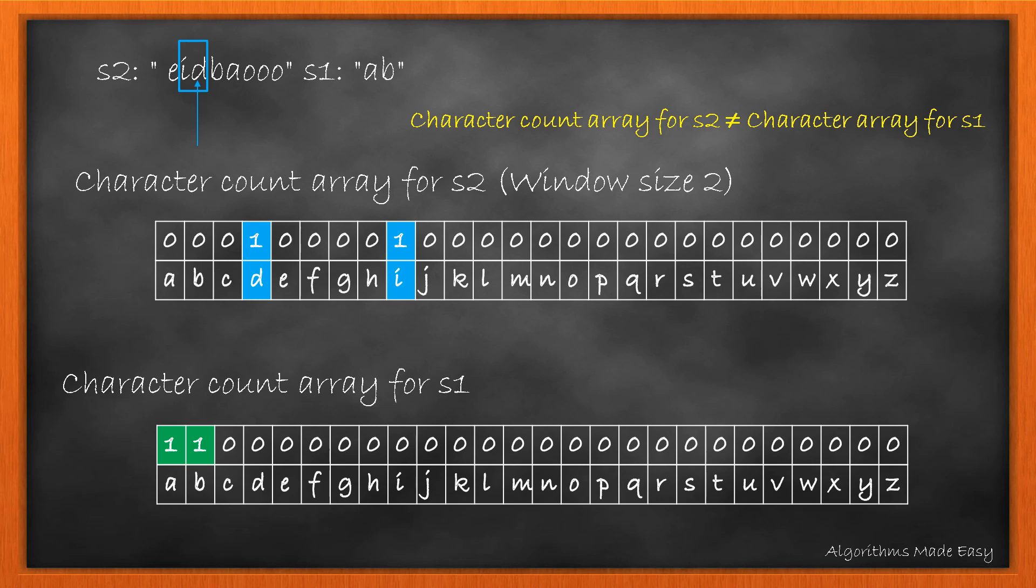As these are not equal, we move ahead, but before moving the window ahead we decrement the count for start element in the array. Similarly we will compare each window in S2 to find if it matches the characters in S1 till we find a match or the end.